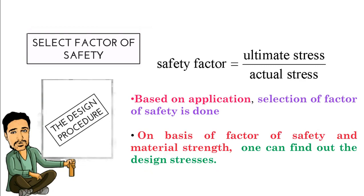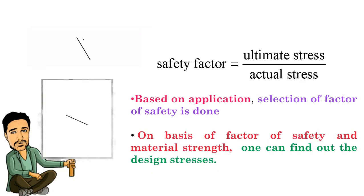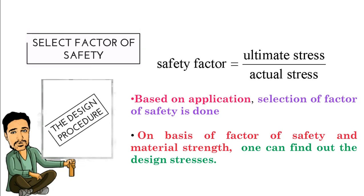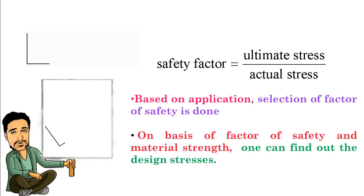Next step is selection of factor of safety. You know factor of safety is maximum stress upon allowable stress or permissible stress, so based on application, selection of factor of safety is done. Based on the material strength, one can find out the design stresses.